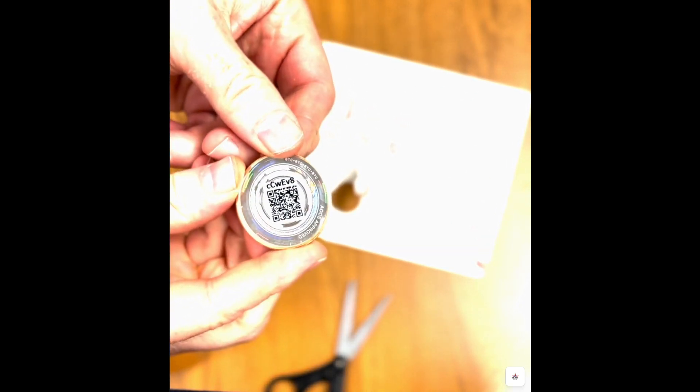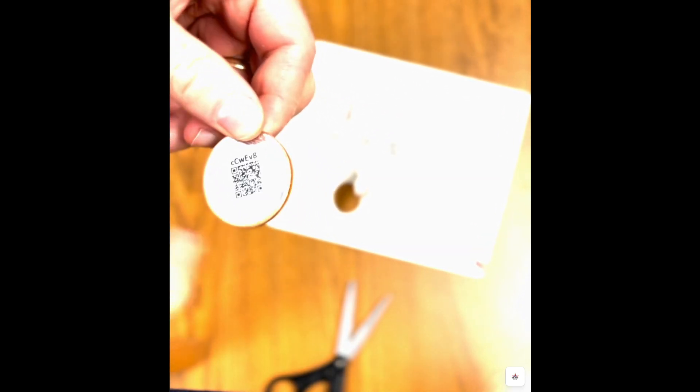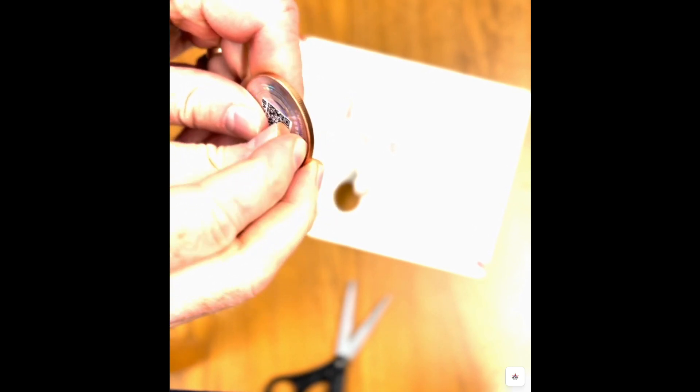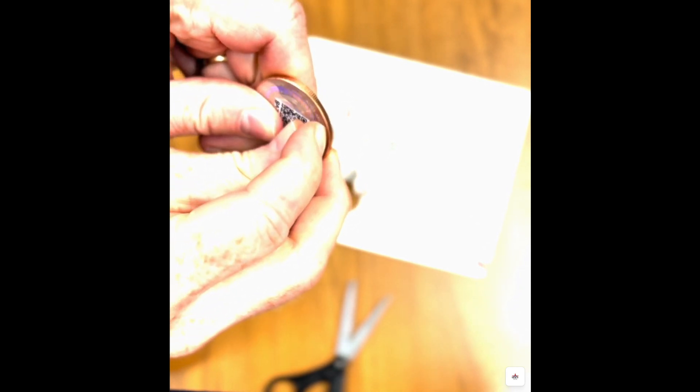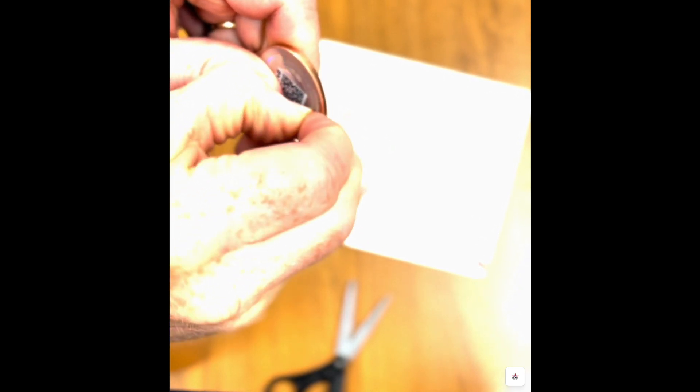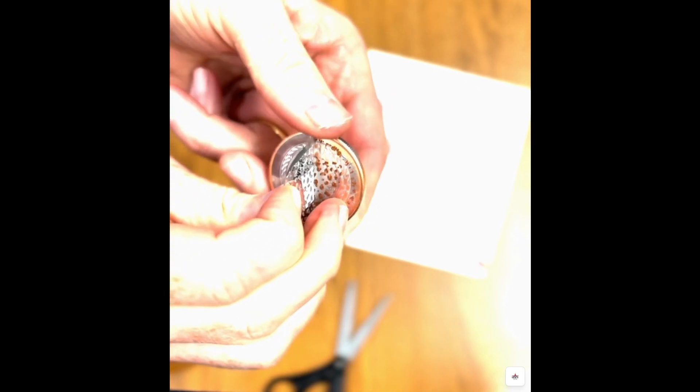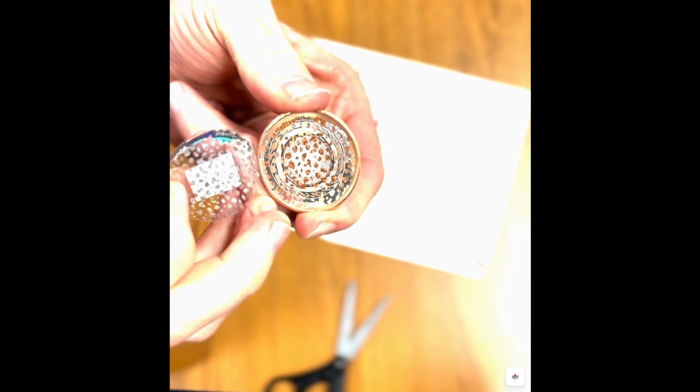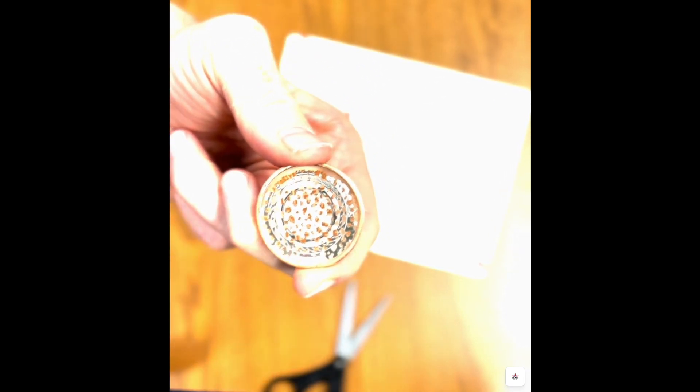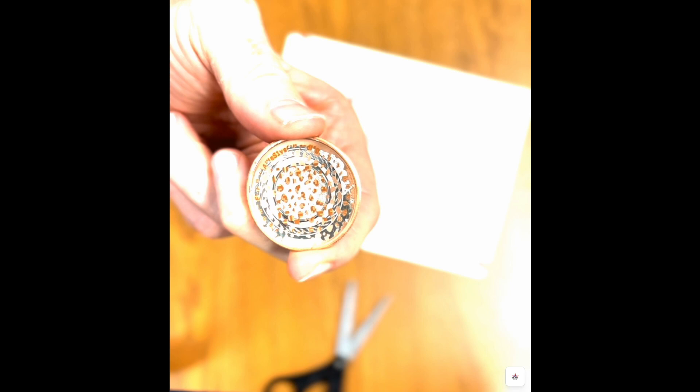Once you have removed your coin from the packaging, you will need to remove the sticker from the back of the coin. The QR code on the front of the sticker connects to your public wallet. This is what you would give to people if they wanted to send you Texitcoin. The sticker was placed there to hide another QR code that is etched onto the coin. This QR code reveals your private wallet address. You should never share the QR code or your private wallet address with anyone.